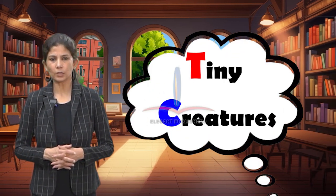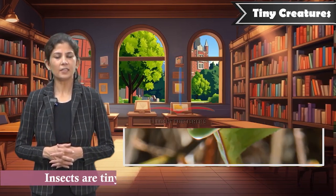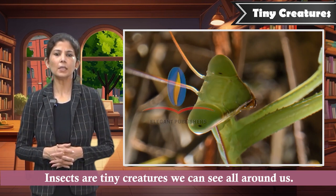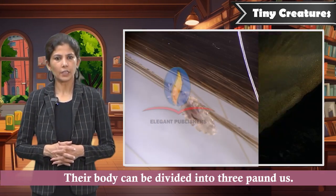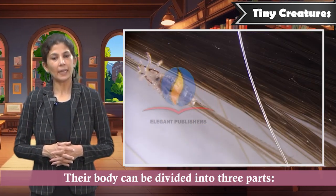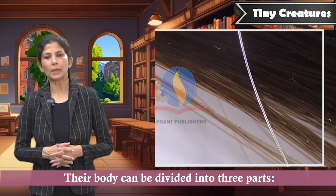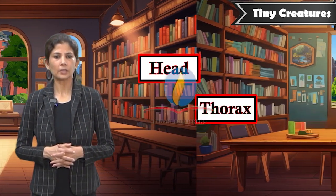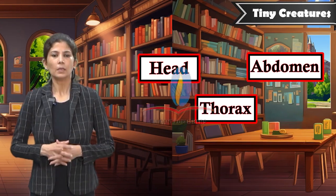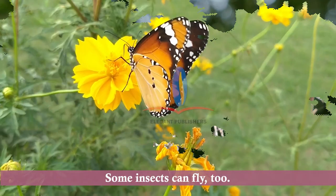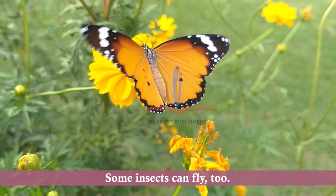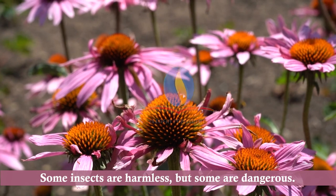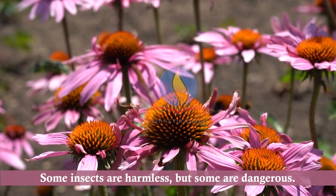Tiny creatures. Insects are tiny creatures we can see all around us. Their body can be divided into three parts: head, thorax, and abdomen. They have six legs. Some insects can fly too. Some insects are harmless but some are dangerous.